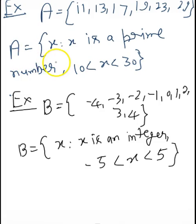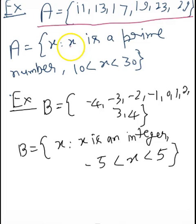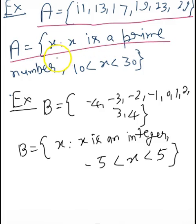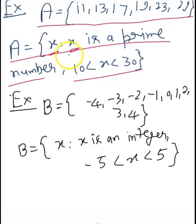For example, suppose set A contains the elements 11, 13, 17, 19, 23, and 29. These are all prime numbers greater than 10 and less than 30. In rule method form, we write set A = {x : x is a prime number and 10 < x < 30}.